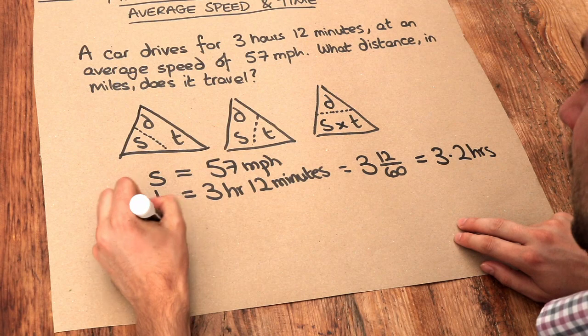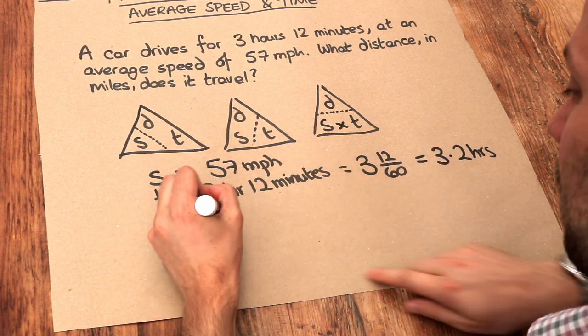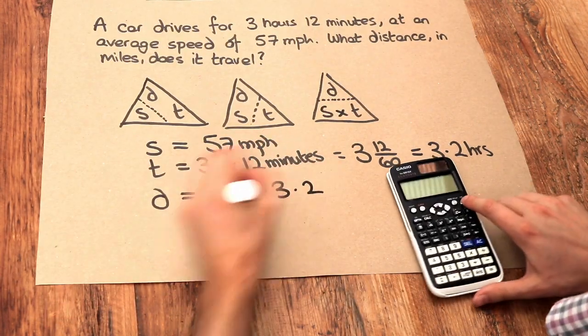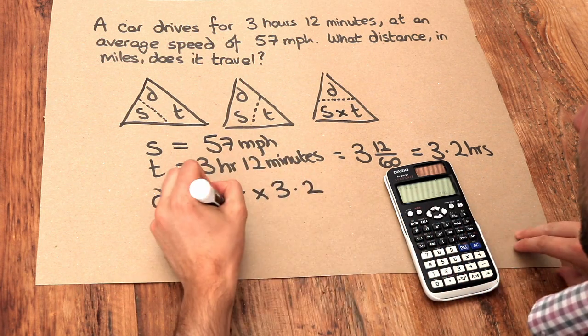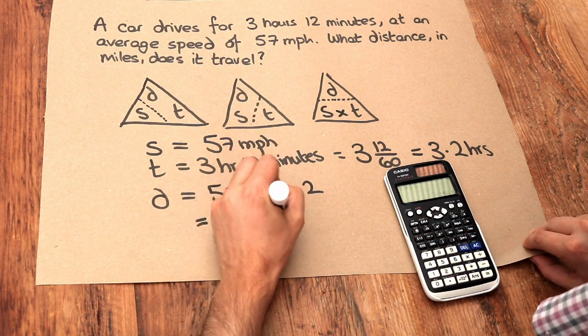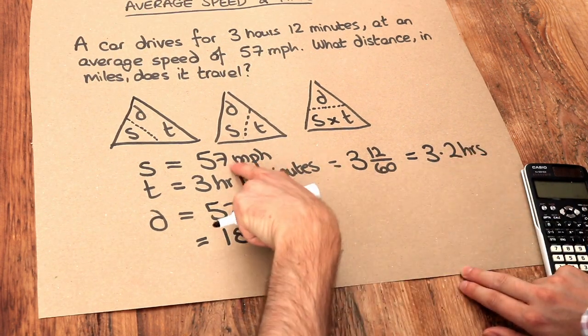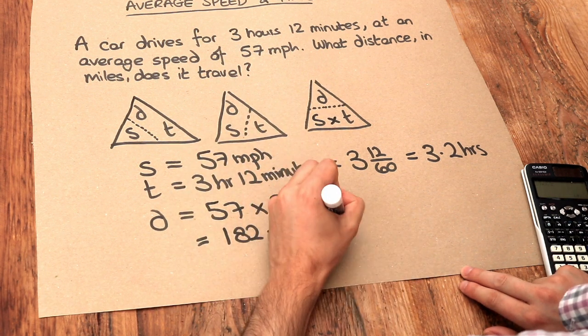So the distance is the speed times the time, so it's the speed of 57 multiplied by the time of 3.2. If I do that on my calculator I get 182.4. And what's the unit? Well this is miles per hour and this is hours, we've got miles there, so it's going to be 182.4 miles.